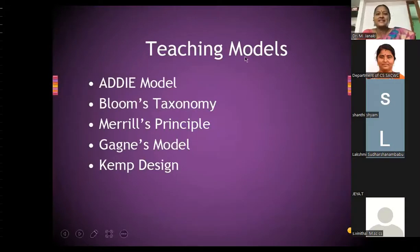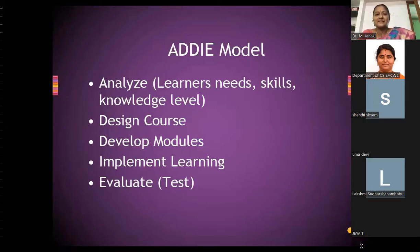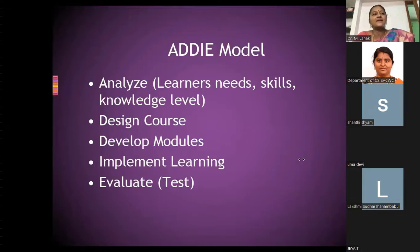So the ADDIE model — the first step is to analyze the learners' needs and skill knowledge level. Before starting a course or class, we should know the details about the students: what area they are from, whether they are from the city or village side, and what basic skills they have — whether they are from a computer science background or a biology background.